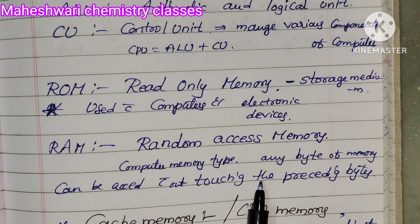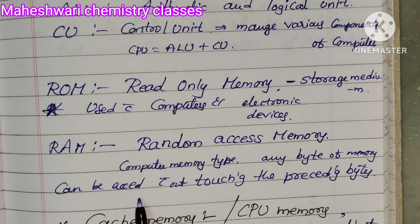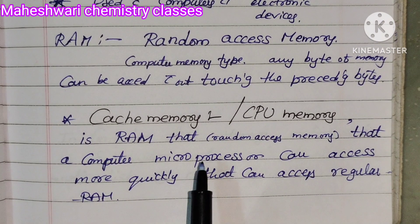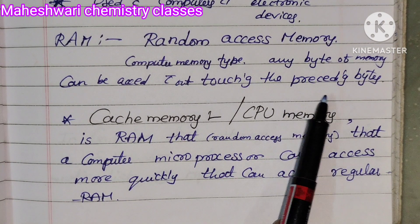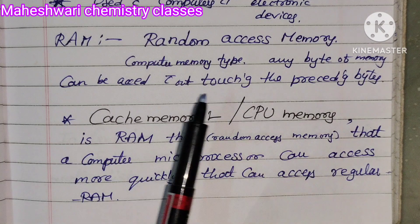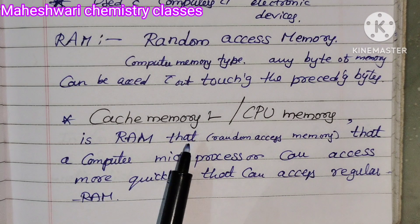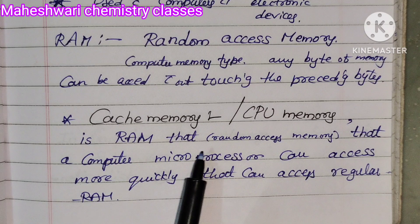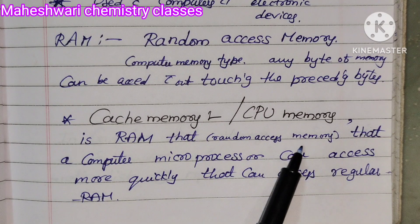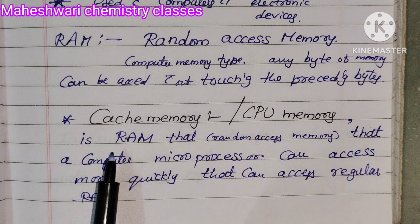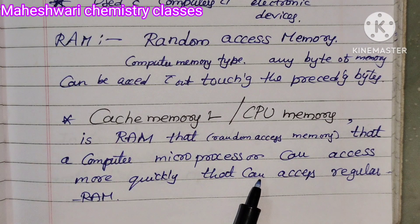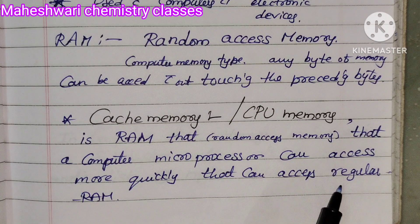Any byte of RAM memory can be accessed without touching it sequentially. Cache memory, or CPU memory, is RAM that a computer microprocessor can access more quickly than regular RAM.